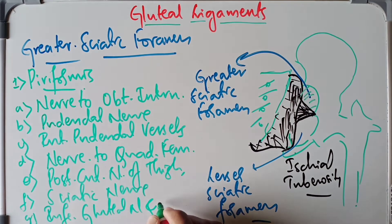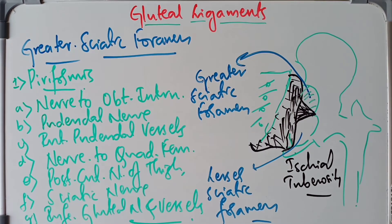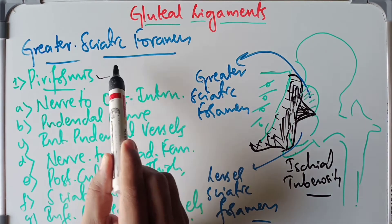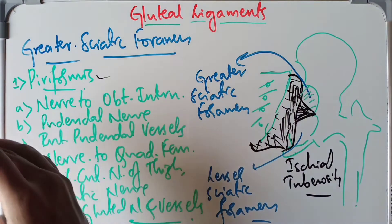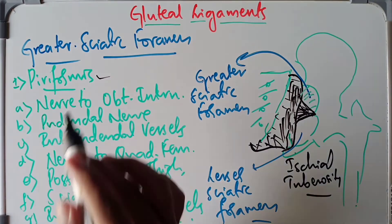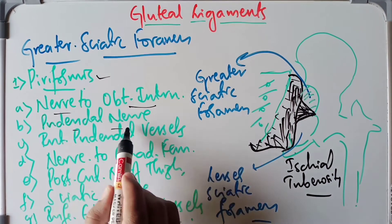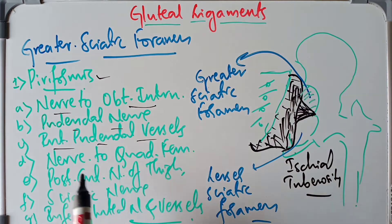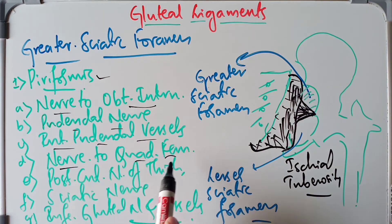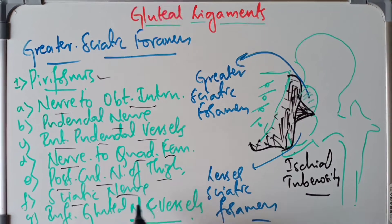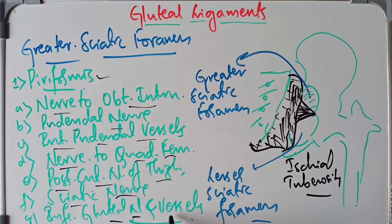So to summarize, the structures passing through the greater sciatic foramen are: the piriformis muscle, which arises from the pelvis and passes through this foramen, and below the piriformis — the nerve to obturator internus, the internal pudendal vessels, the pudendal nerve, the nerve to quadratus femoris, the posterior cutaneous nerve of the thigh, the sciatic nerve, the inferior gluteal nerve, and the inferior gluteal vessels.